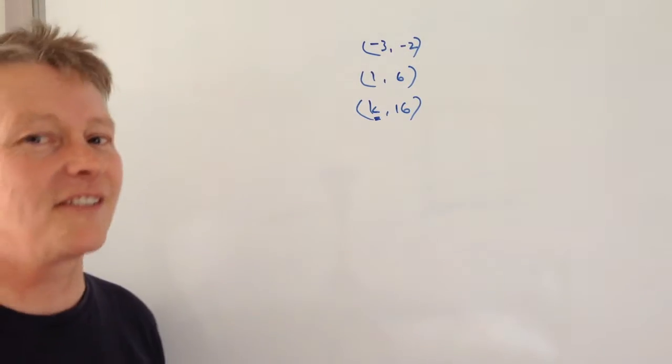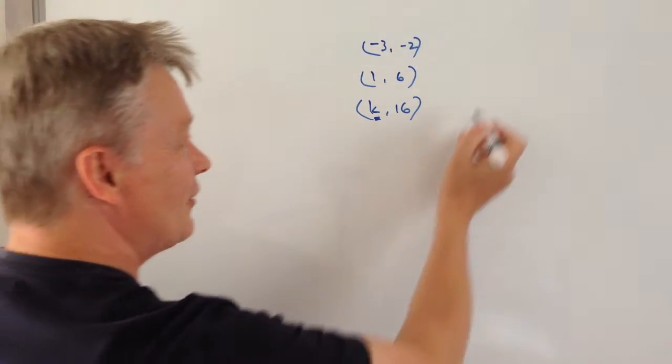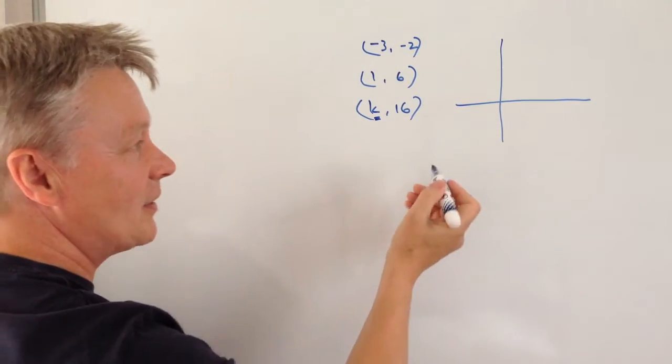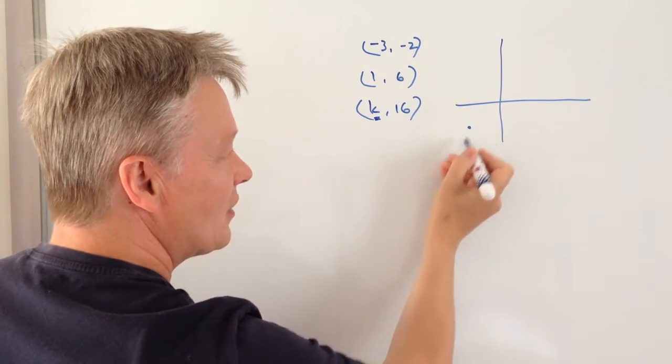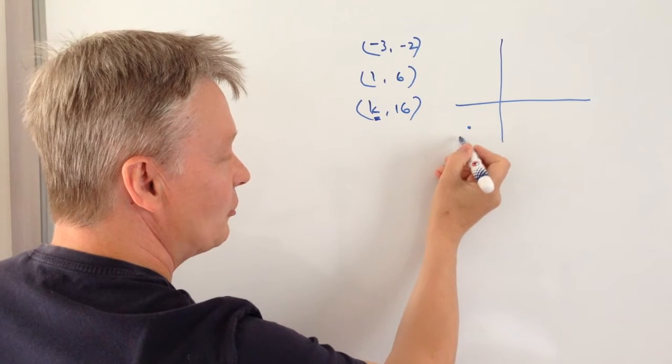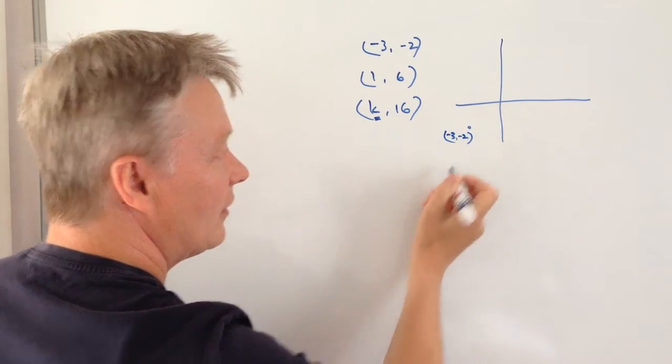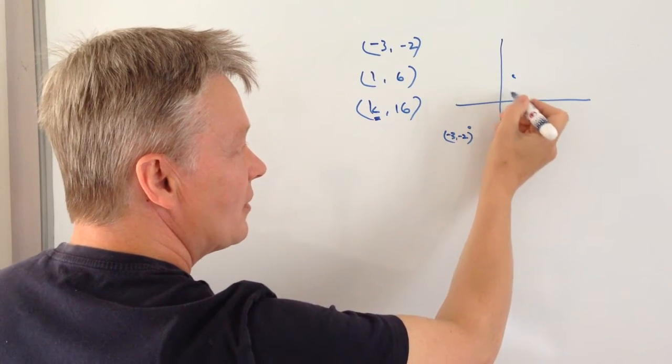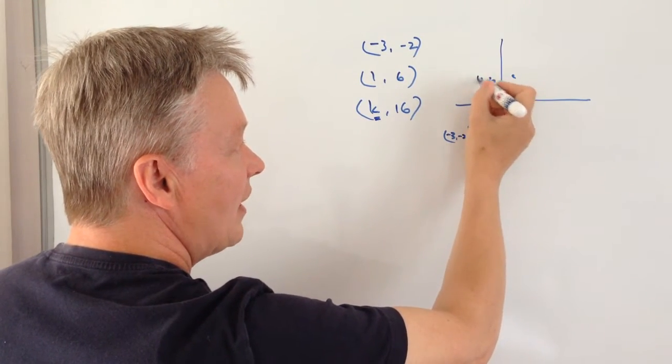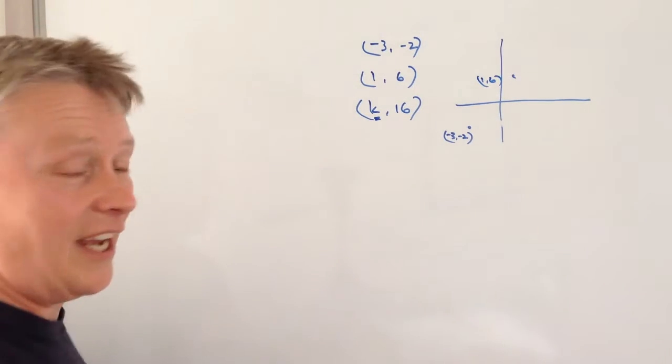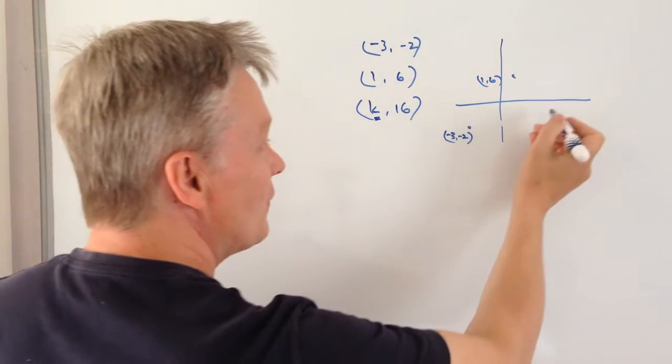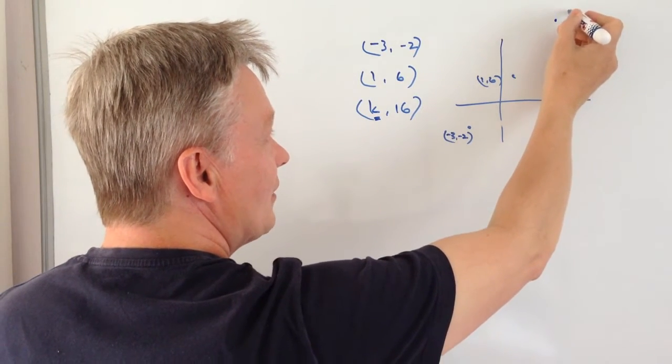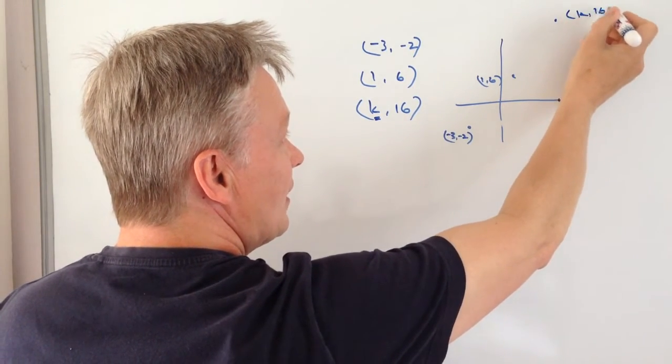We could actually say it's the value of X. If we draw a sketch here, we've got (-3,-2), so there's that point here. Then (1,6) is going to be up there somewhere, and then K,16 is this value of K wherever it is, up there somewhere.